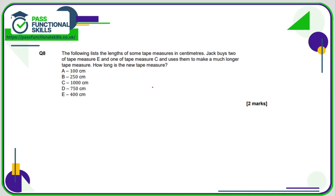Question number 8 — non-calculator. Jack buys 2 of tape measure E and 1 of C and combines them to make a very long tape measure. 2 times 400 is 800, and C is 1000, so 1000 plus 800 is 1800 centimetres.